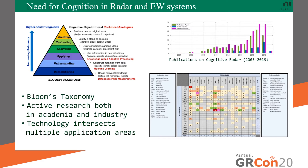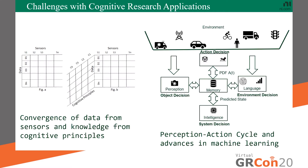This technology is being used in multiple application areas — not just aerospace and defense, but also transportation, commercial 5G, and cognitive radio applications. The application space is wide. One of the key challenges is the convergence of data from multiple sensors and the knowledge gained from cognitive principles. It is no longer a two-dimensional space; it has mapped itself into a three-dimensional space where both concepts are brought together.